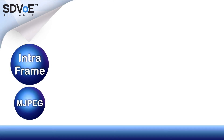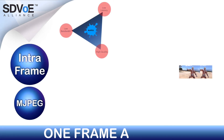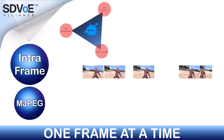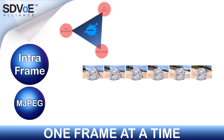The simplest codec is called intraframe, meaning one frame at a time. Here, a single frame of video is compressed as a still image and then sent.